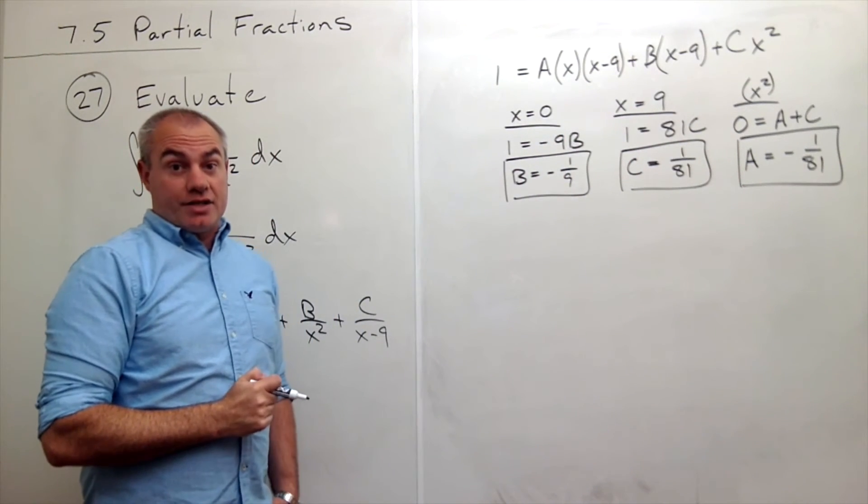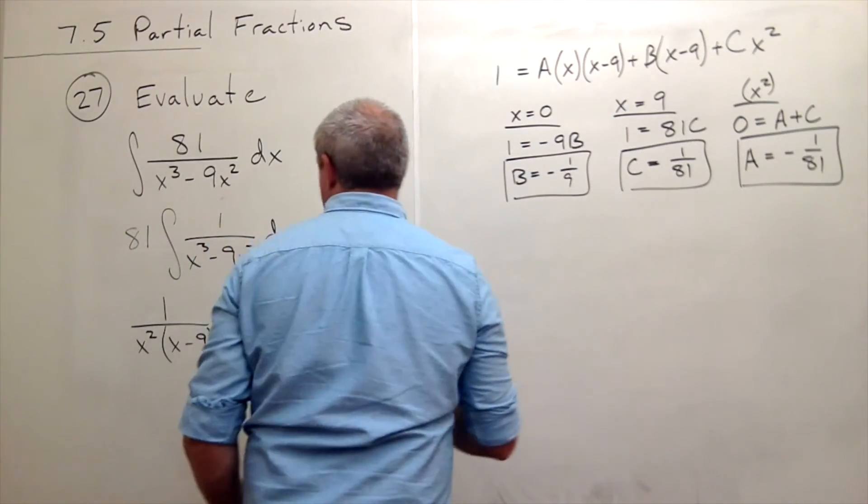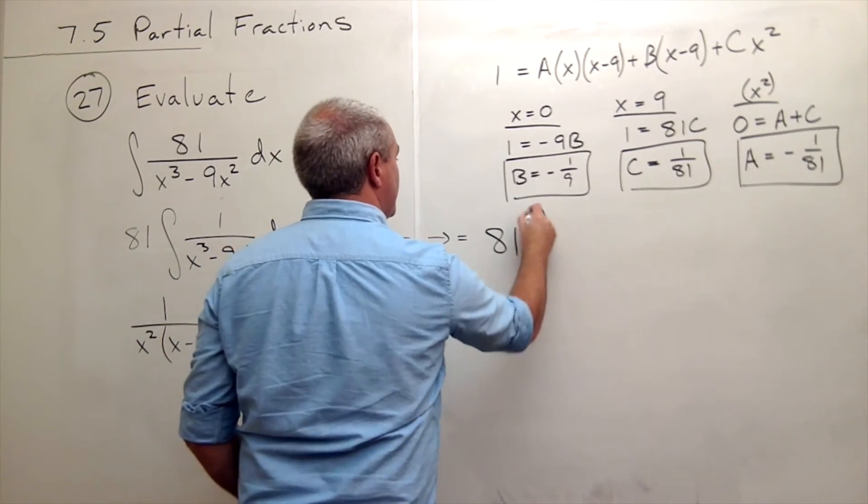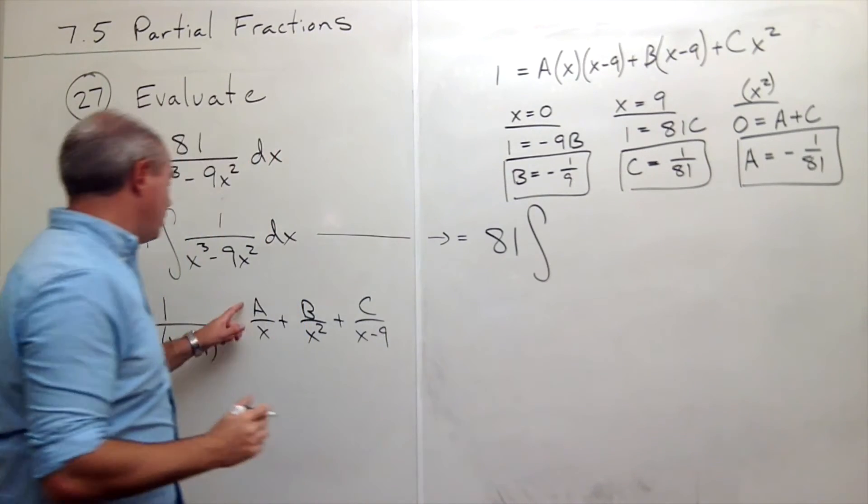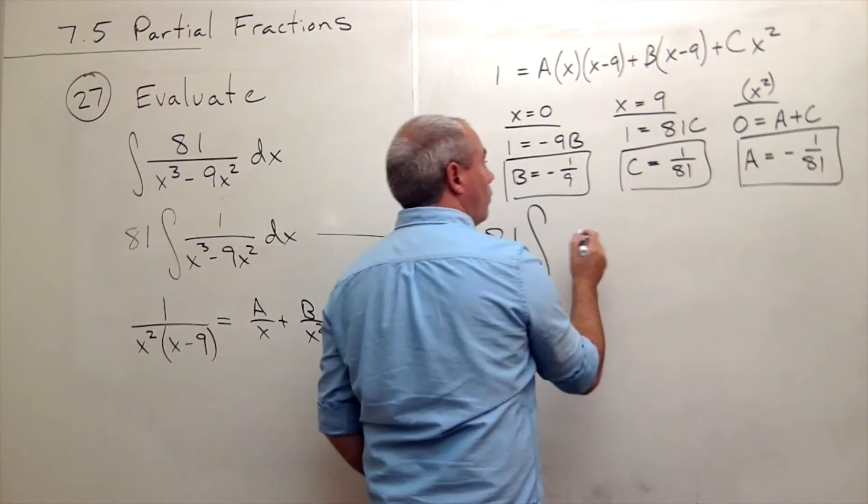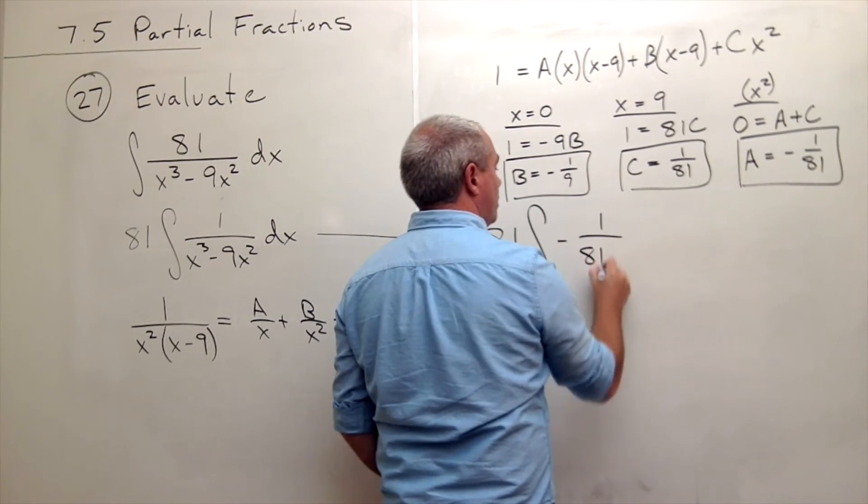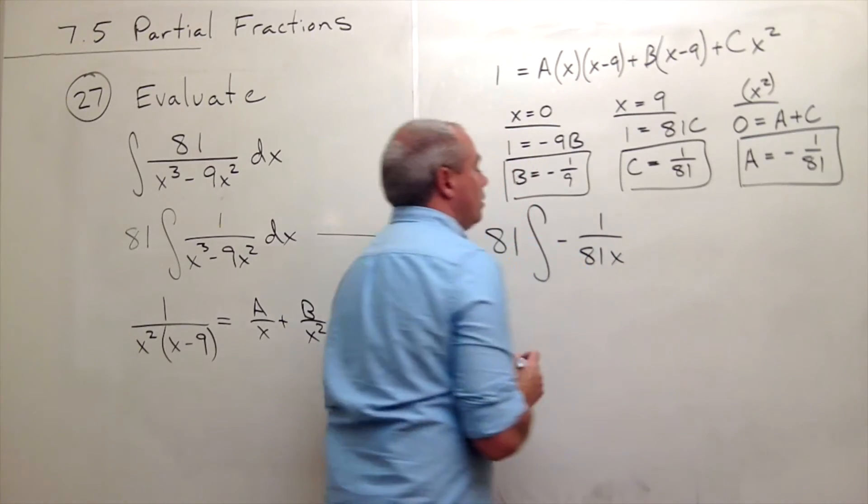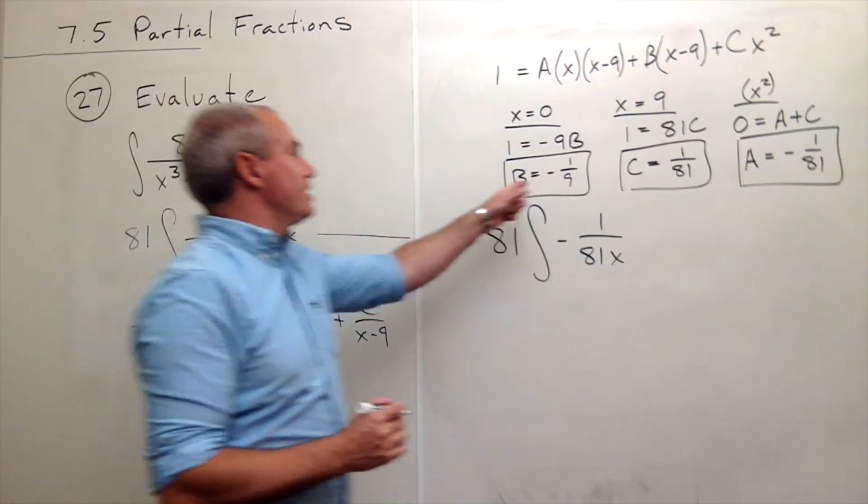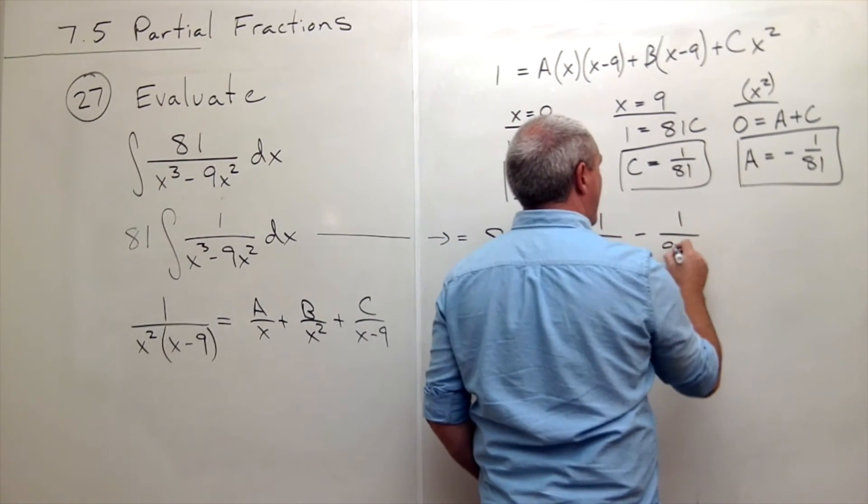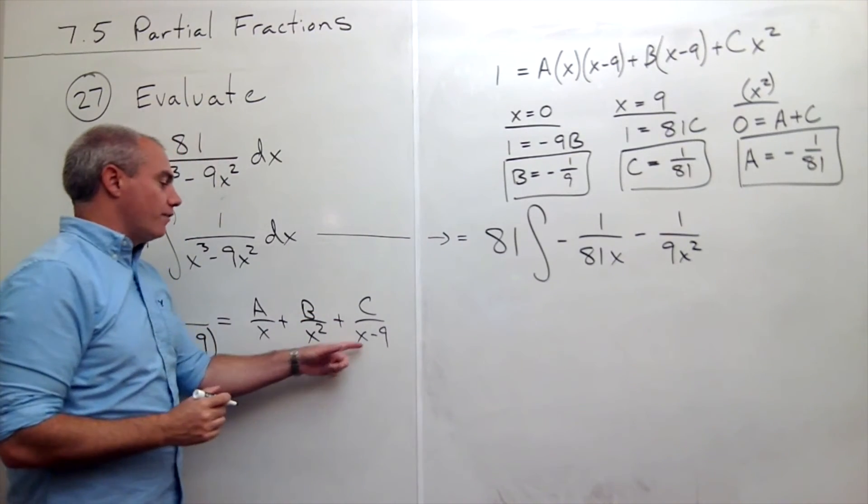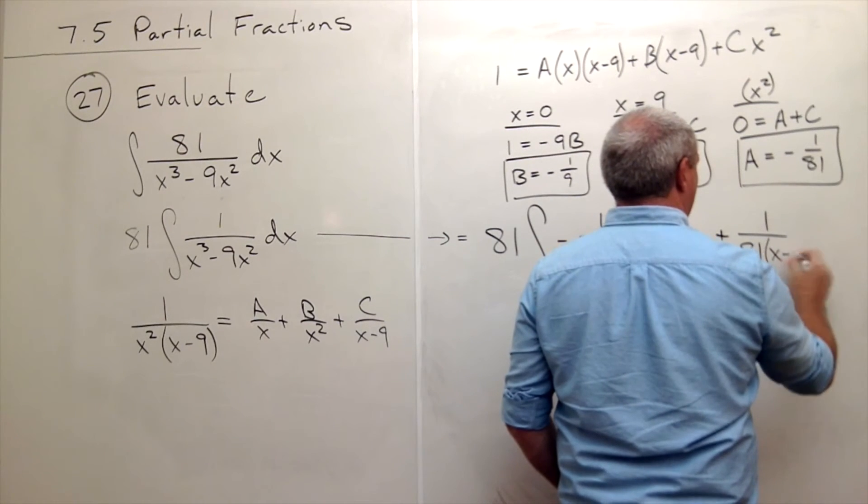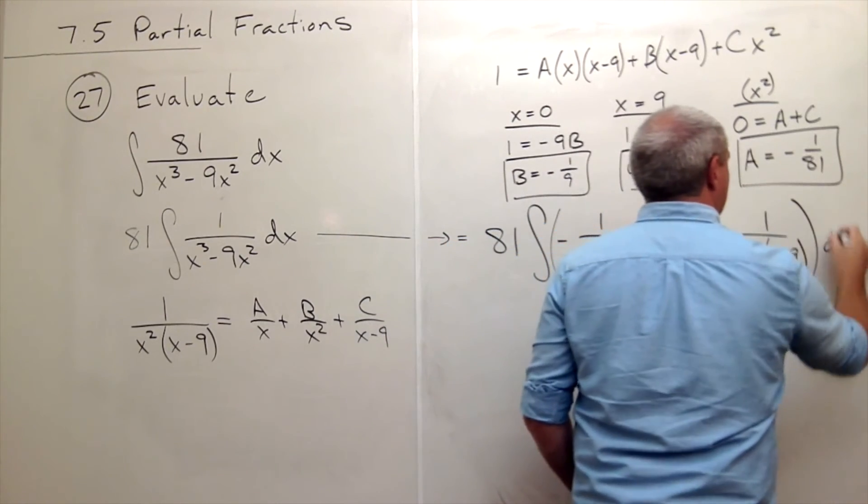We've got our A, our B, and our C. Now we can rewrite our integral. This is equal to 81 times the integral of A over x. A was negative 1 over 81 times an x on the bottom. Then we get B over x squared. B is negative 1 ninth, so I get minus 1 over 9x squared. And then finally I get C over x minus 9, or plus 1 over 81 times x minus 9, all of that dx.